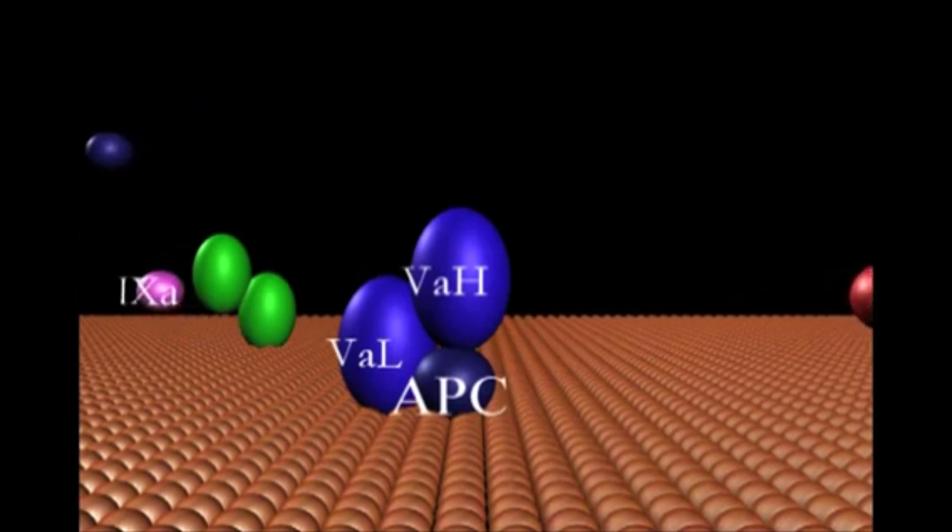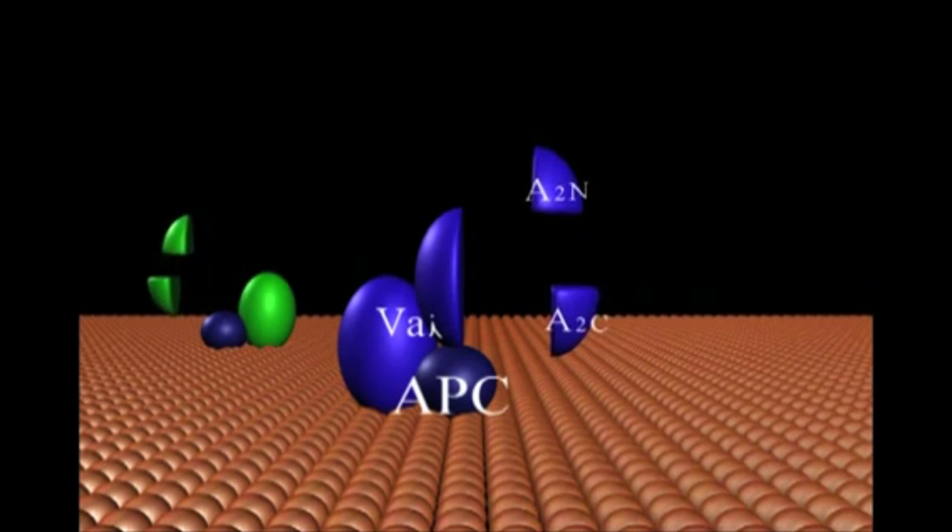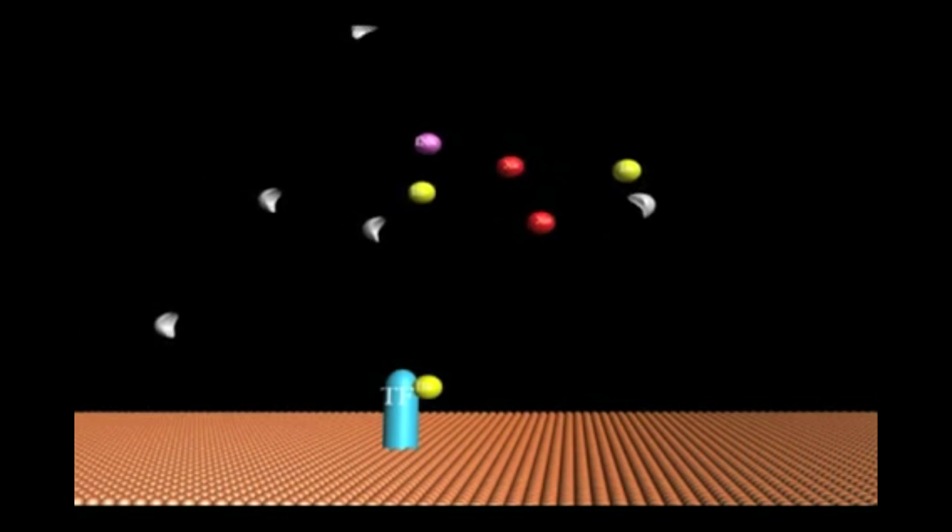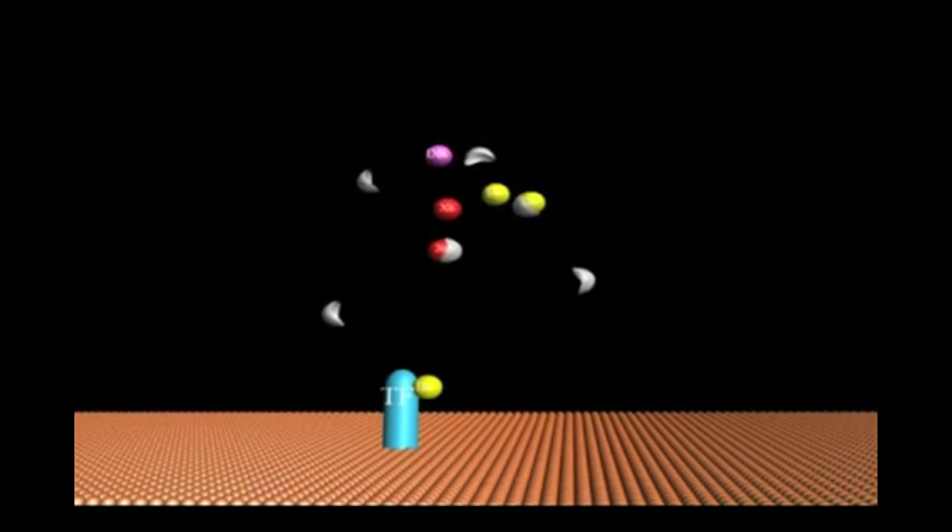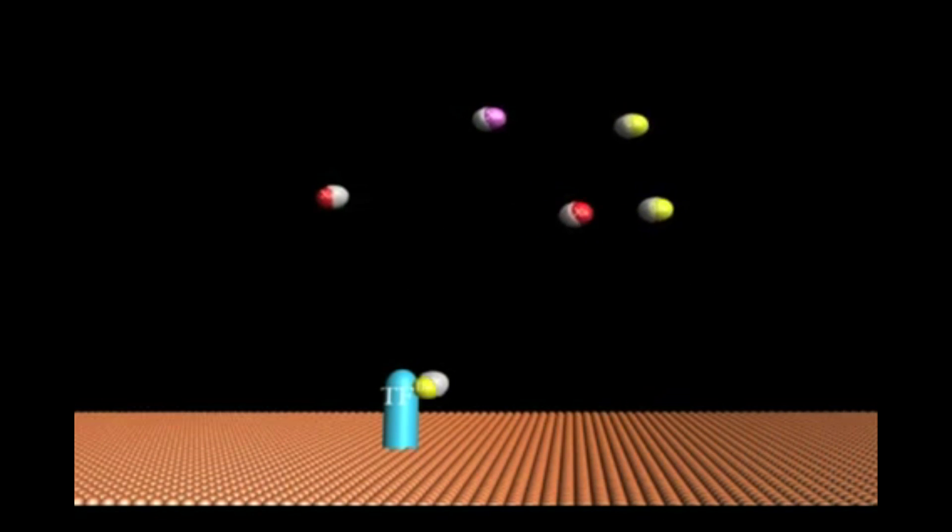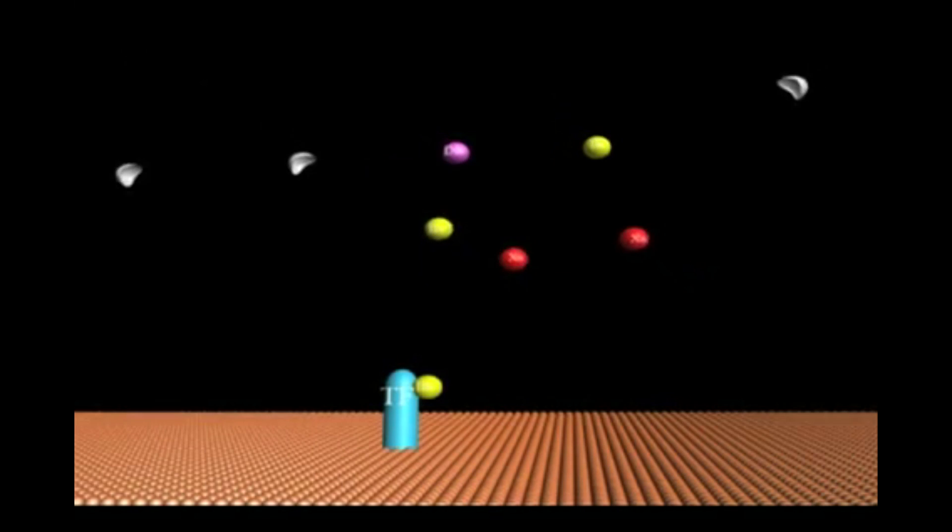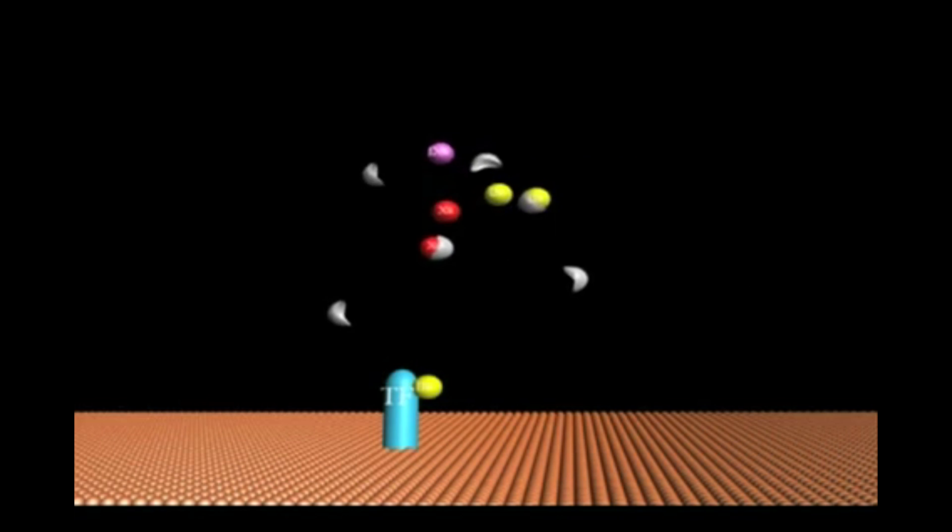APC in turn down-regulates any intrinsic factor-10a (8a, 9a). The free serine proteases (2a, 9a, 10a) of the coagulation system in the plasma environment are rapidly inhibited by the surplus of antithrombin (AT) molecules.